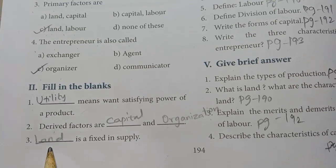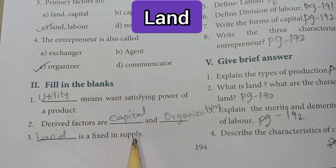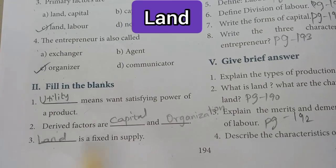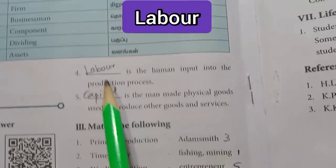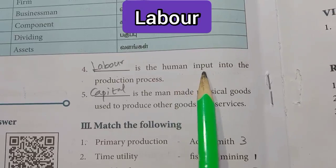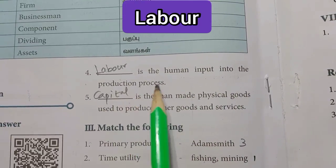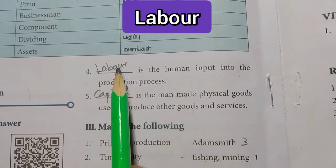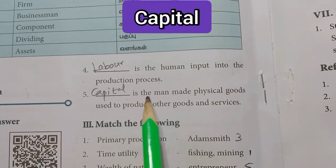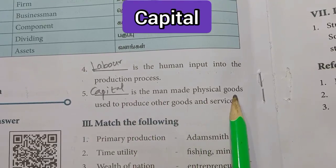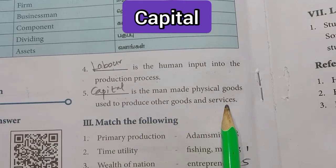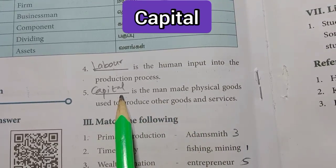Third one: Dash is fixed in supply. Answer is Land. Fourth one: Dash is the human input into the production process. Answer is Labor. Fifth one: Dash is the man-made physical goods used to produce other goods and services. Answer is Capital.